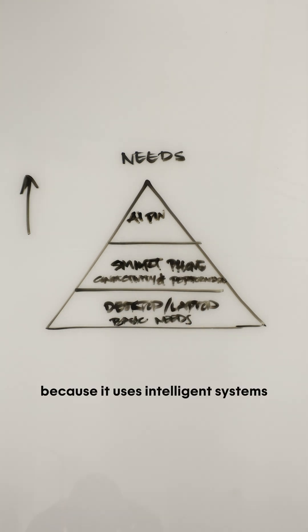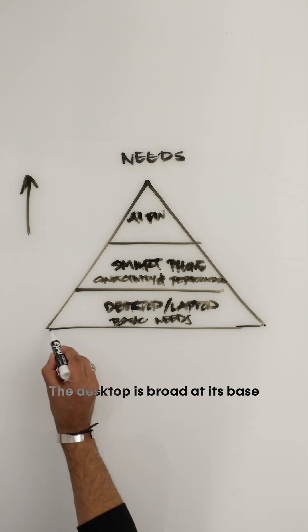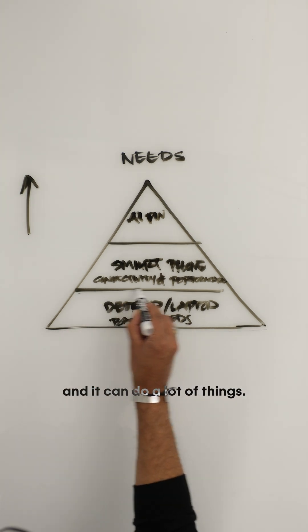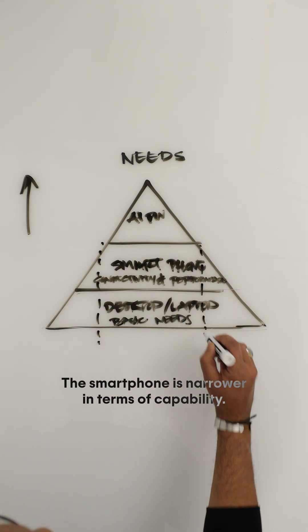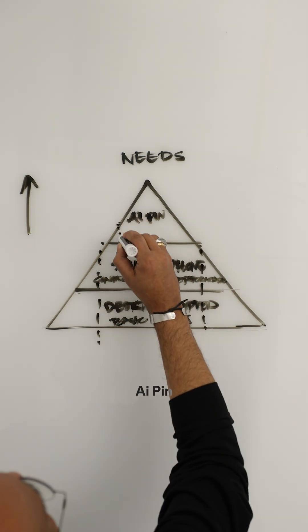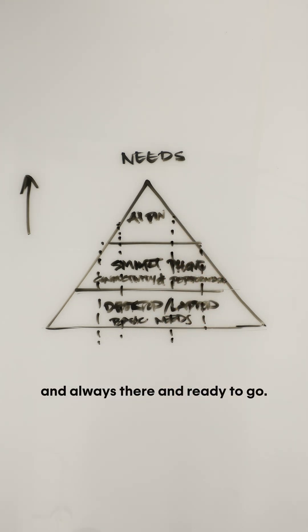AI Pin sits on top because it uses intelligent systems, allowing you to be more agile and be more seamless. The desktop is broad at its base, and it can do a lot of things. The smartphone is narrower in terms of capability. AI Pin, while narrower, is actually more agile and always there and ready to go.